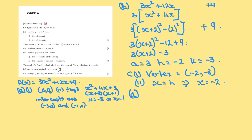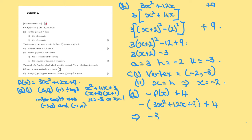Part D: g of x is f of x reflected in the x-axis and then translated by the vector (0, 4). That means we want minus f of x plus 4. Minus f of x is minus 3x squared plus 12x plus 9, plus the 4. Therefore we get minus 3x squared minus 12x minus 9 plus 4, so g of x equals minus 3x squared minus 12x minus 5.